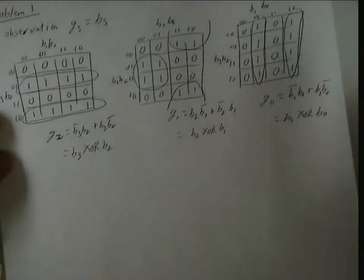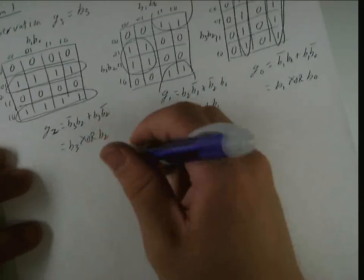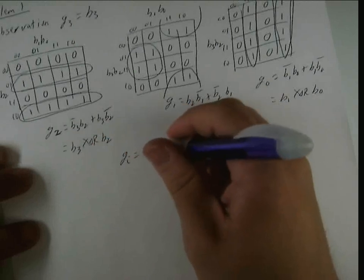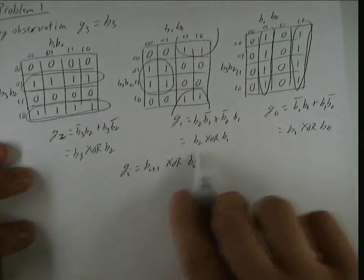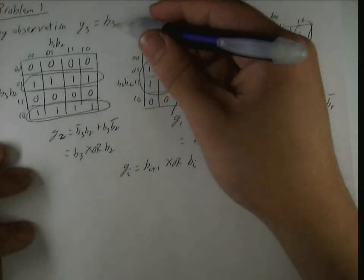So actually, a very simple way to express this is any of the G sub i's are equal to B sub i plus 1 XOR B sub i. As you can see, this G1 is, that works, that works, that one works. And since there's no B sub i plus 1, this is just B3.